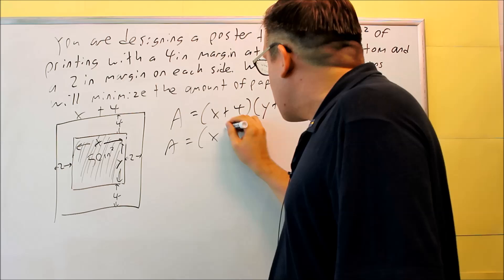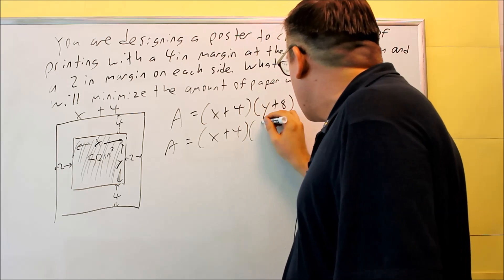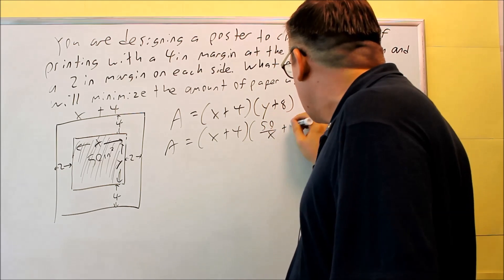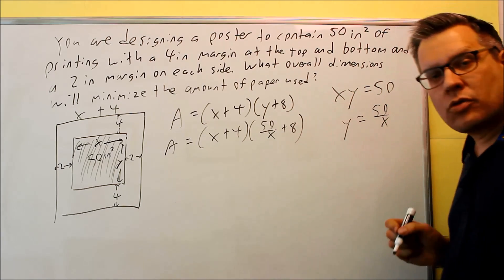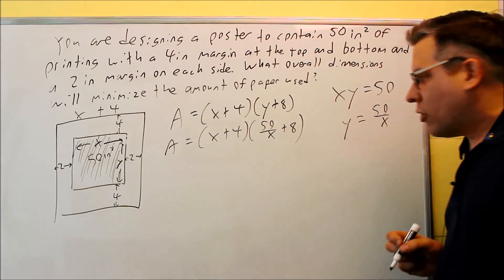So then my area is equal to x plus 4 times 50 over x plus 8. And now by doing that, I've eliminated one of my variables. So now I have all one variable there.